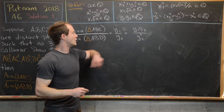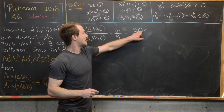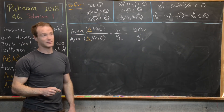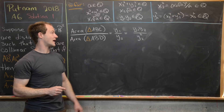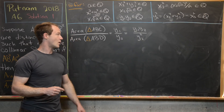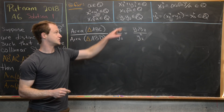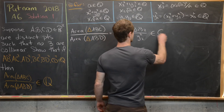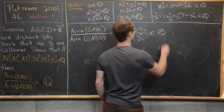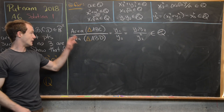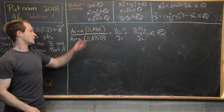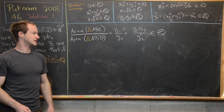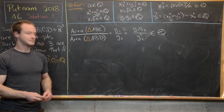We have y1y2 rational divided by y2² rational, so y1/y2 = y1y2 / y2² is a rational number. We've shown that the ratio of the areas of the two triangles is rational. That's a good place to stop.